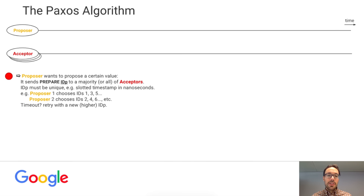There are three milestones that always happen sequentially in a Paxos run — I will mark them with stars in the slide. First, a majority of acceptors promise on a certain ID, so no ID lower than that can make it through ever. Second, a majority of acceptors accept a certain ID and value — consensus is reached on that value. And third, whenever a proposer or learner gets a majority of accept messages for a certain ID, they know that consensus has been reached on the value.